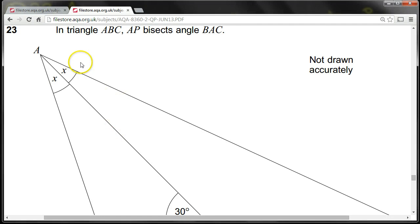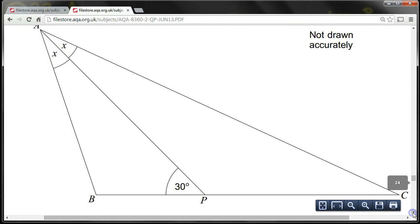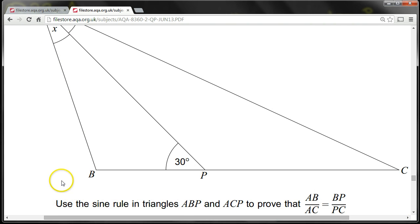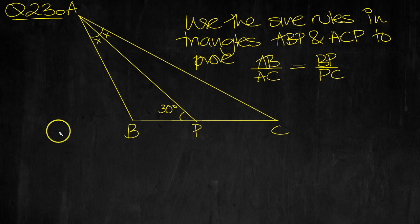Here's the question: Triangle ABC, where AP bisects angle BAC. We can see all the information in the question. AP bisects angle BAC, so that's an X and an X, and that's 30 degrees. It says use the sine rule to prove this, so let's summarize the question.